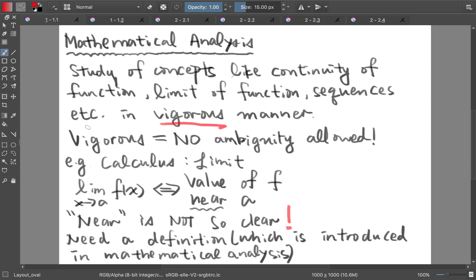Here rigorous means no ambiguity should be allowed in our statements. For example, in calculus we study the limit. When we talk about the limit of f(x) as x tends to a, we mean the value of f near a. However, in our definition, the term 'near' is not so clear. So we need a definition, which will be introduced in mathematical analysis.